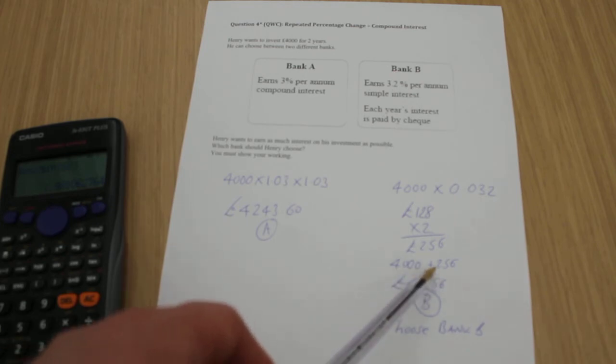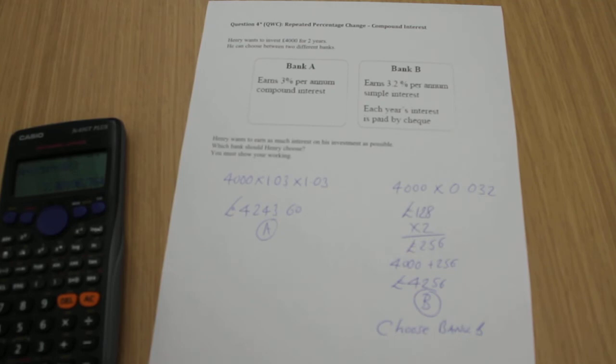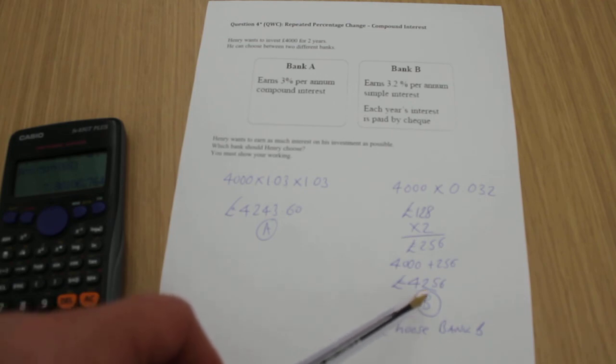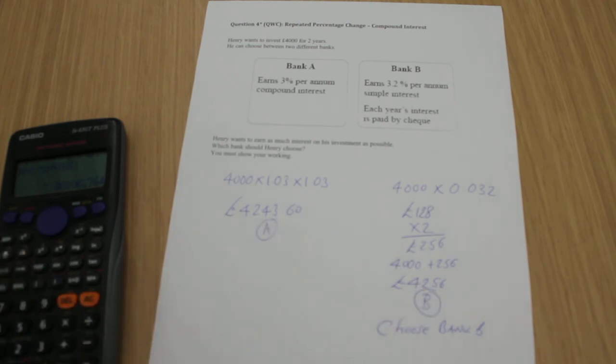Add my £256 to my £4,000, I get £4,256. In this particular case, we would choose Bank B because, in fact, £256 is more interest than £243, so you're better off using Bank B.